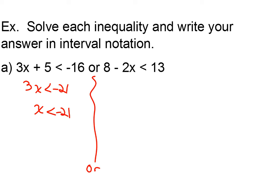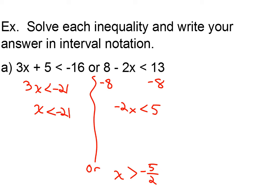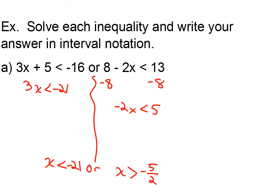On the other hand, solving the other inequality by subtracting 8 from both sides, I get negative 2x is less than 5. So x is greater than negative 5 halves. Now my two choices are x is greater than negative 5 halves, or x is less than negative 21.